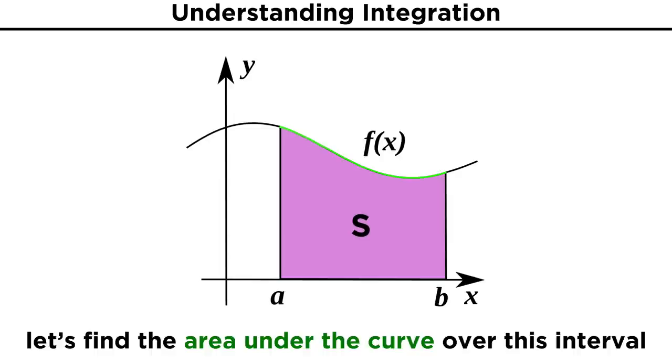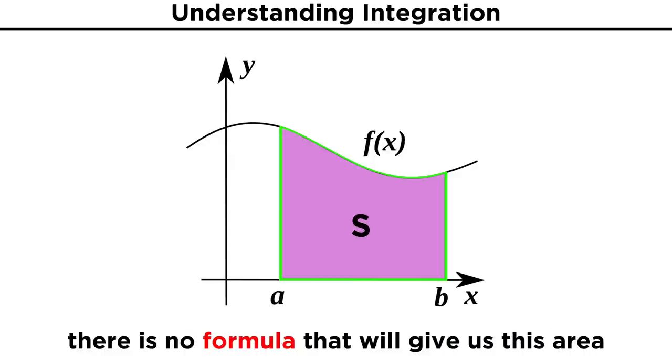s, that is enclosed by the curve, the x axis, and the vertical lines x equals a and x equals b. We quickly realize that there is no formula for this, as this is not a rectangle, or a trapezoid, or any other polygon, as polygons have only straight line segments for sides.